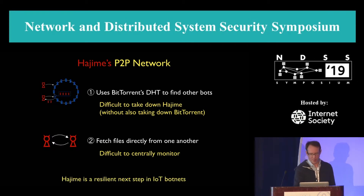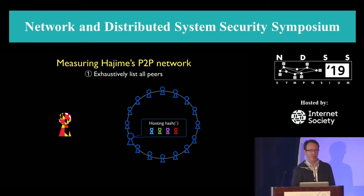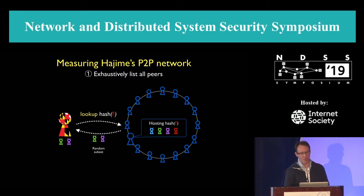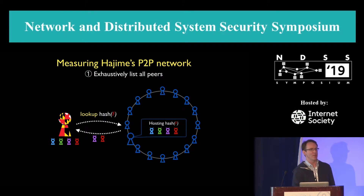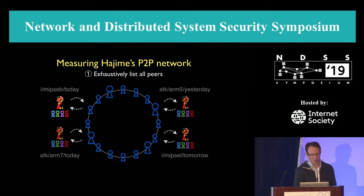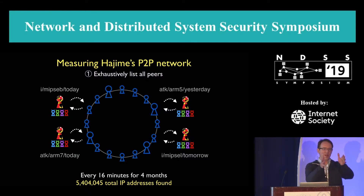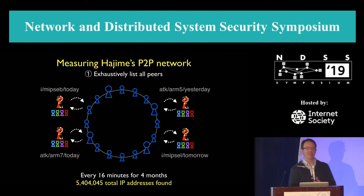So how do we monitor Hajime? Very simply — we join the DHT. For each module the bot master publishes, each architecture and each file type, we exhaustively look up that file in the DHT and collect all of the bots that are hosting it. We do this every 16 minutes, and we do it for a radius around the current day — two days before and two days after — in case a bot has some skewed version of the current day's clock.